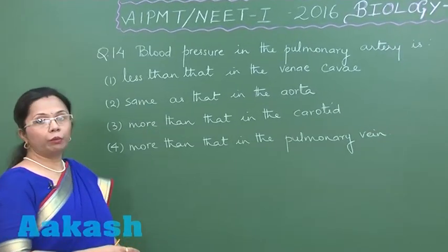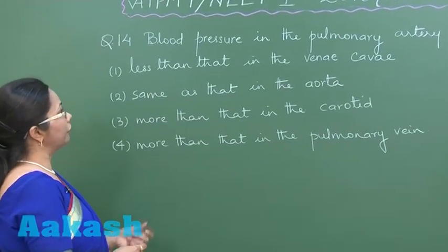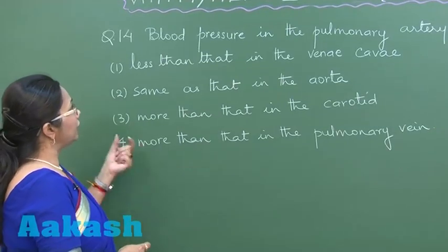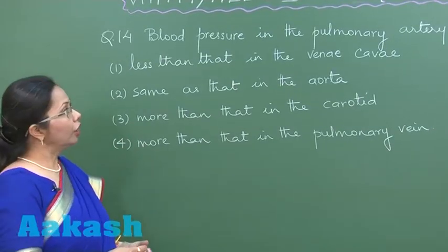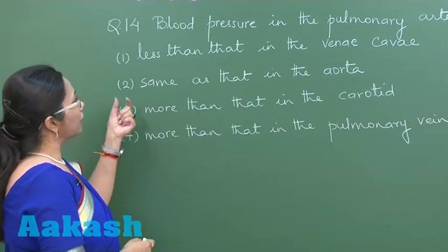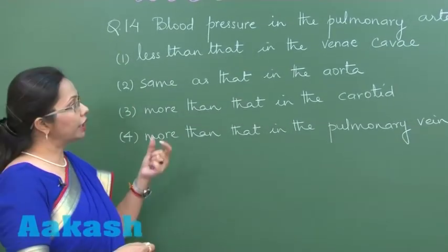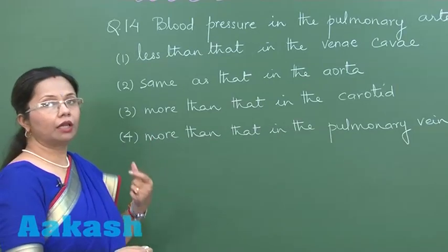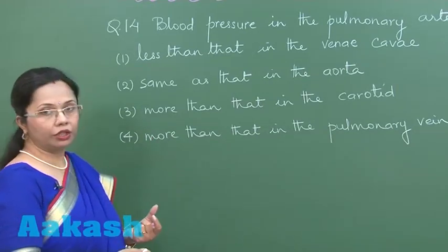The blood pressure in the pulmonary artery is? First choice, less than that in the vena cava. So that is wrong. Vena cava will have lesser blood pressure. Same as that in the aorta. That's again wrong because aorta has a higher pressure than that in the pulmonary artery.